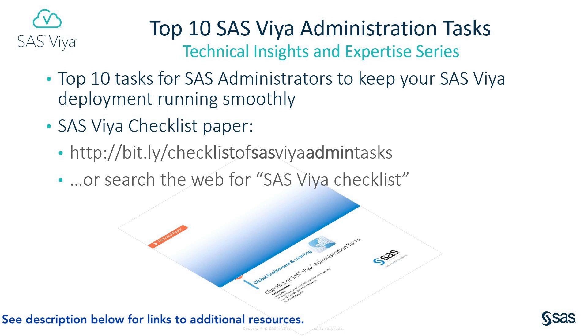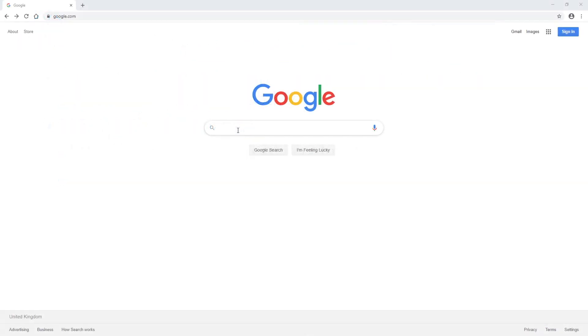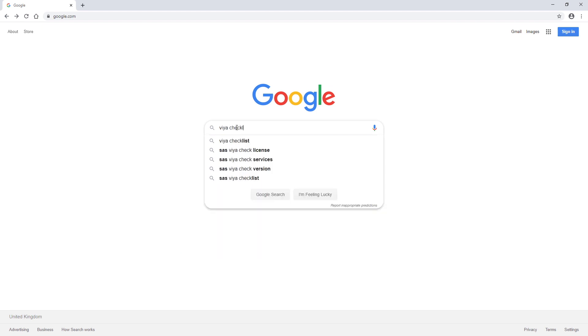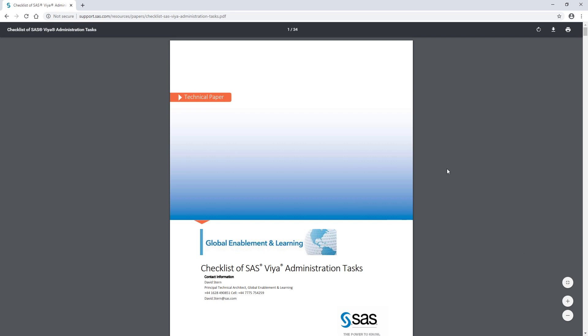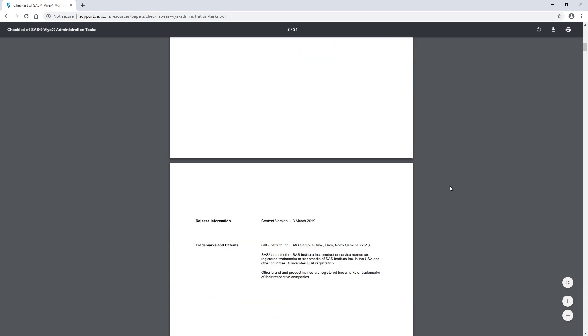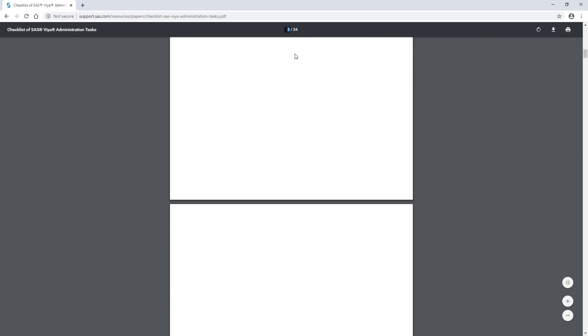Of course, every SAS Viya deployment has its own particular combination of products and its own unique end-user created content, so the list of which administration tasks are most important will obviously vary between SAS Viya deployments. This video is intended to make some suggestions about what you might need to do and to show you where to find out more. If you're already doing all of the things in this top 10, that's excellent. Perhaps you'll find something else that is useful in the checklist paper.